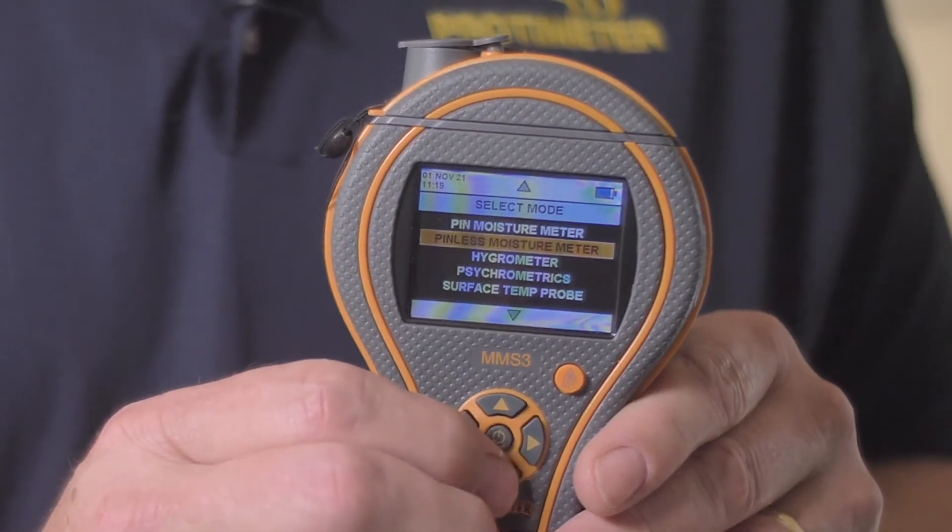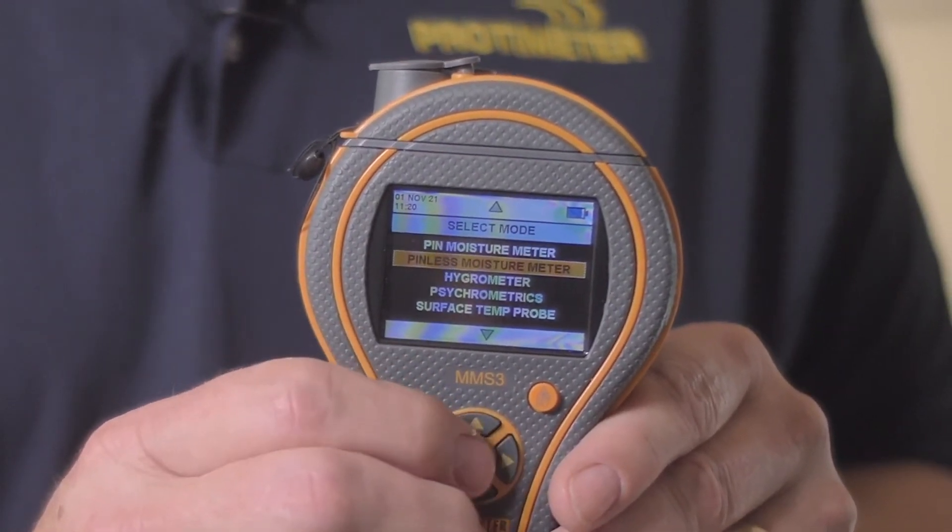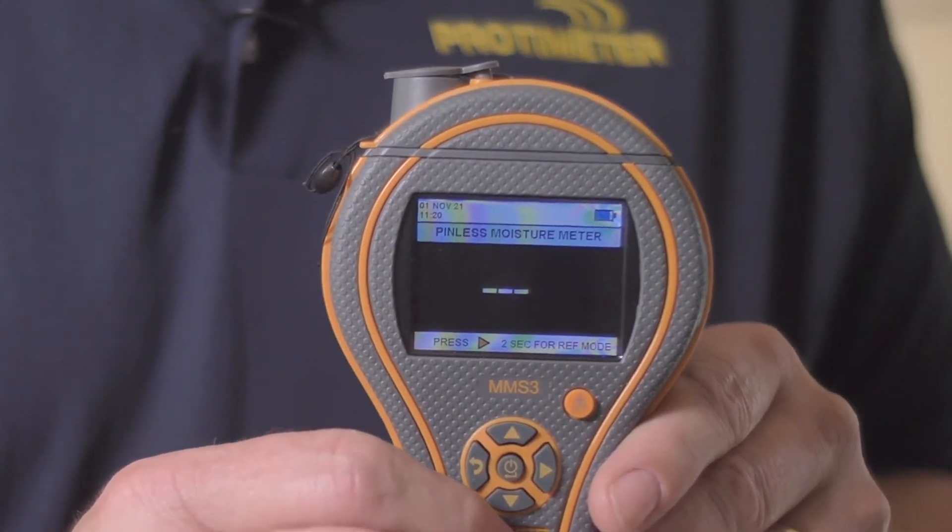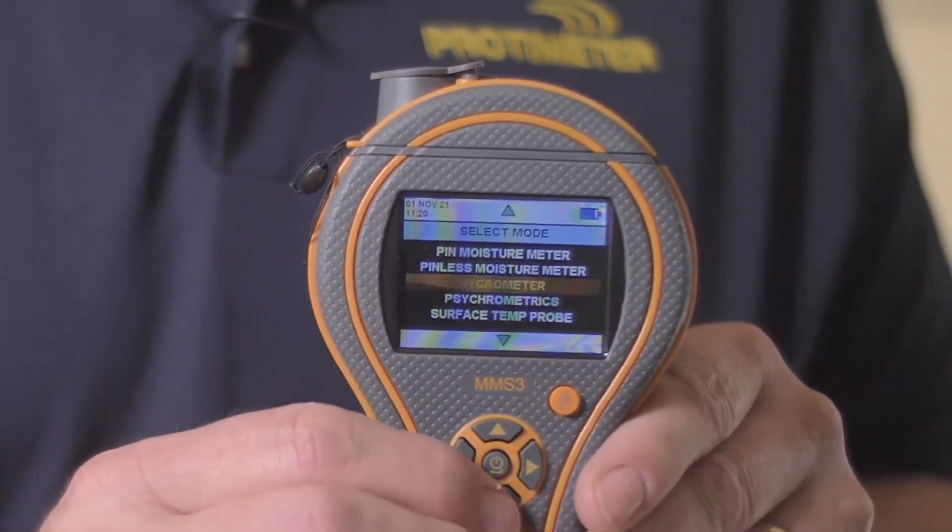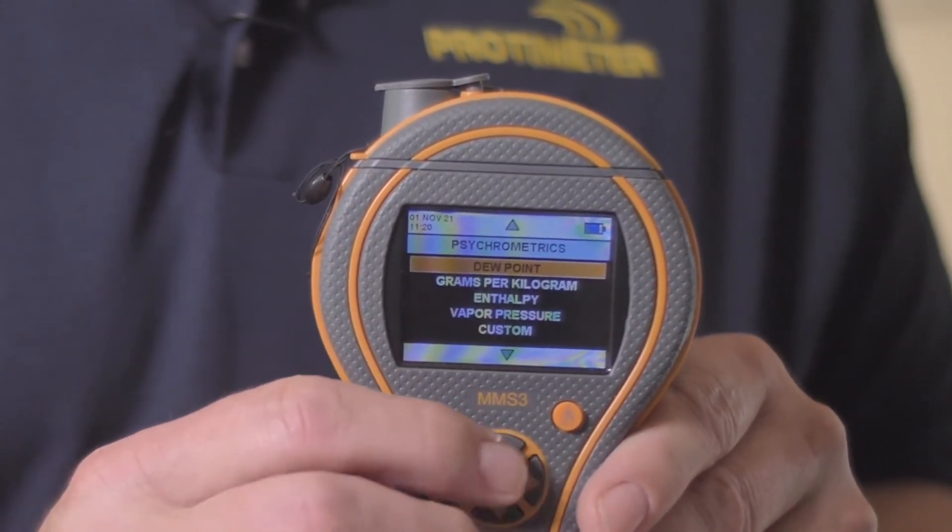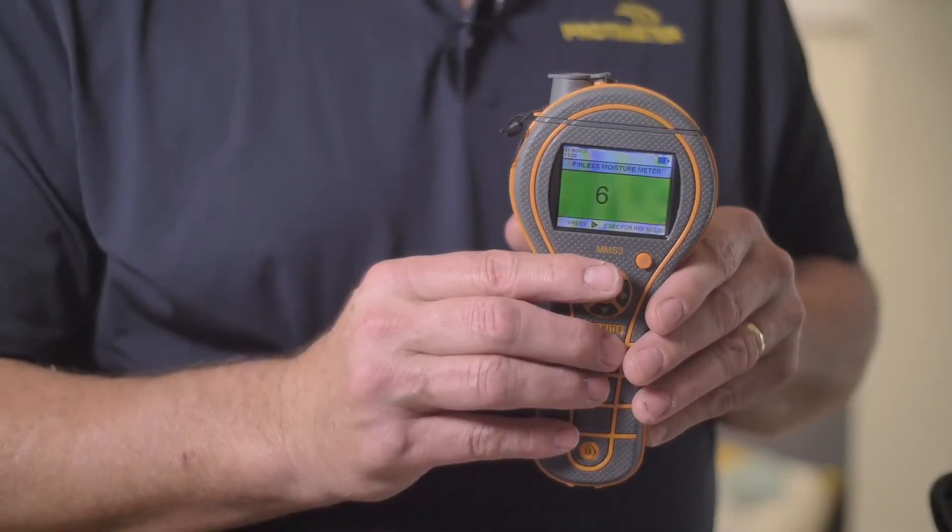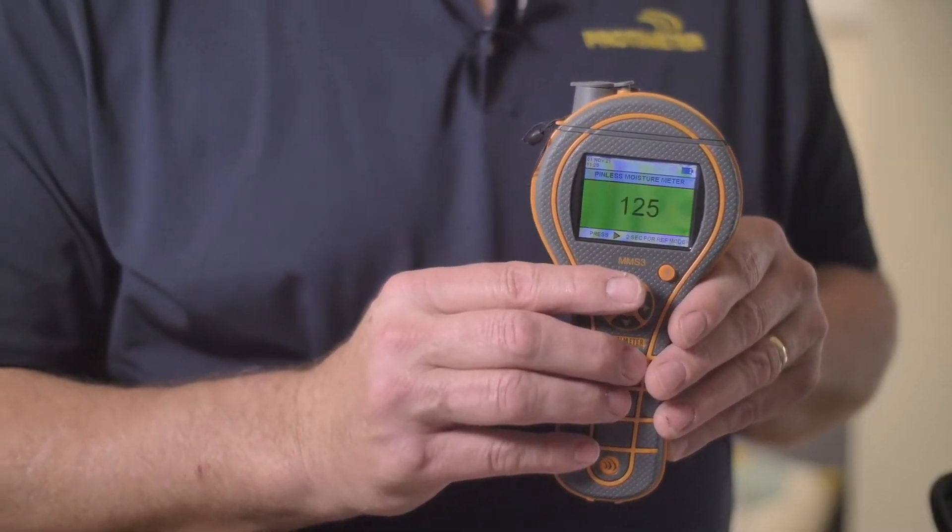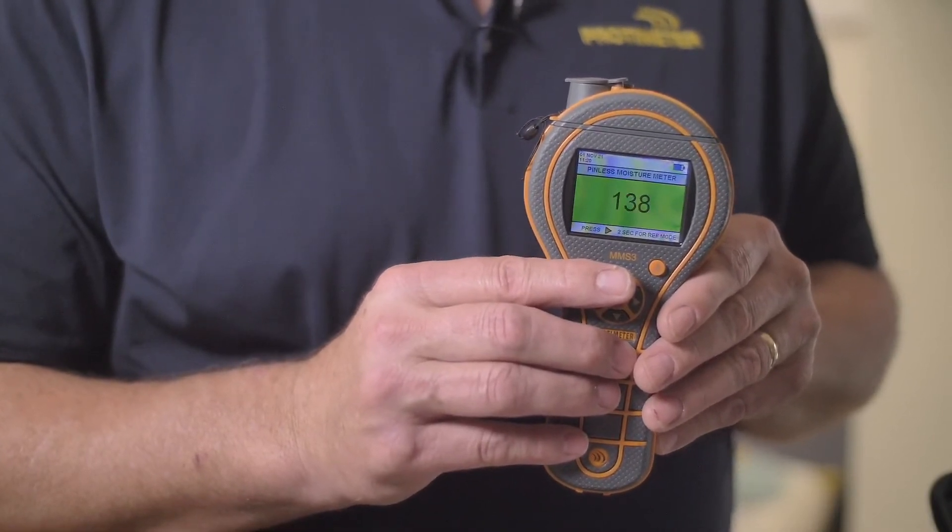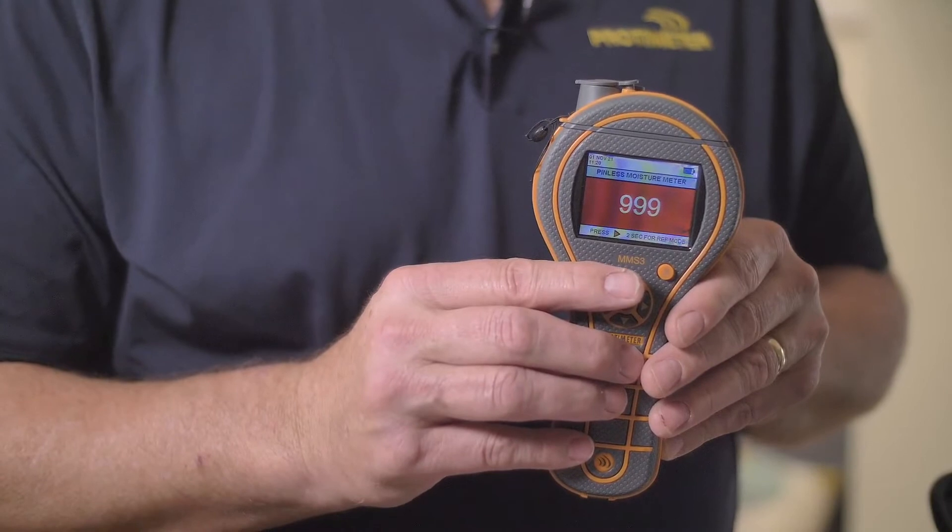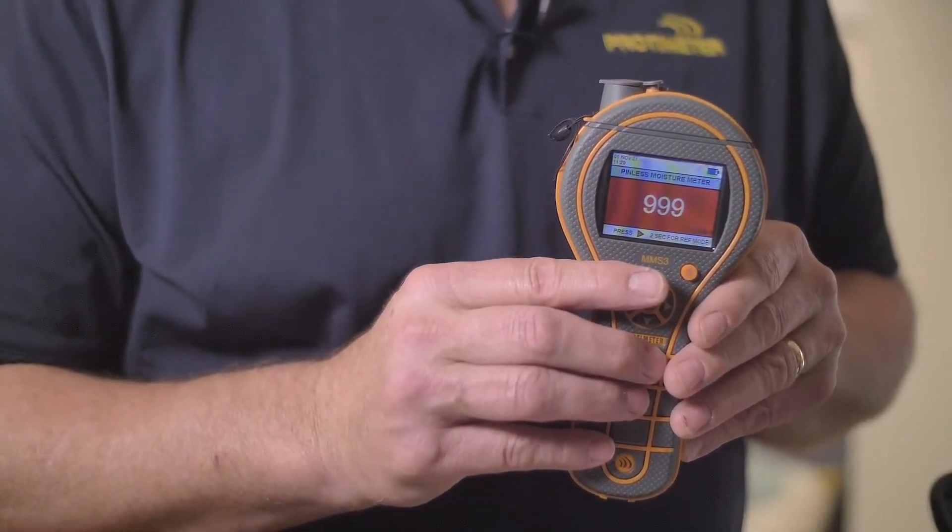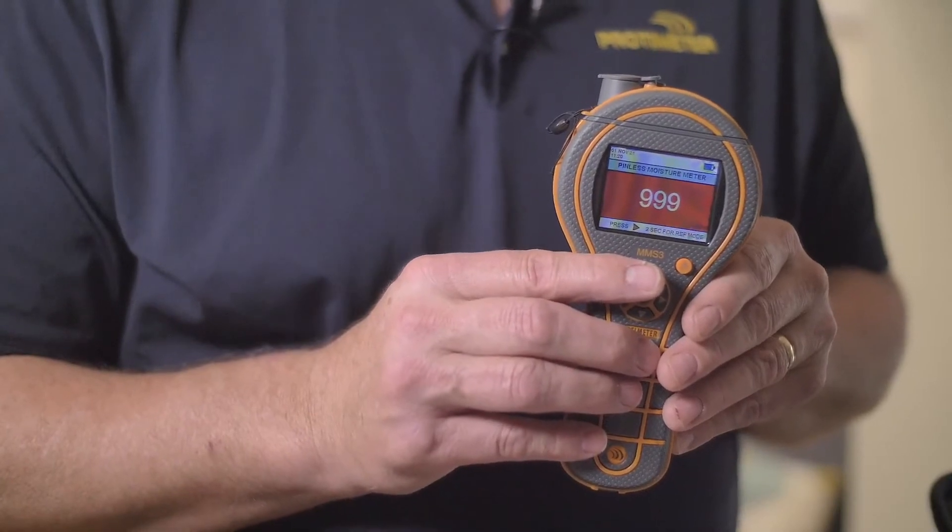Selecting each of the functions is very simple. Just select the function, press the center button, and now we're in that function. You'll also notice that we've changed some of the user interface if you were an MMS2 user. Now we have the large green, yellow, and red display warning you of the moisture condition.